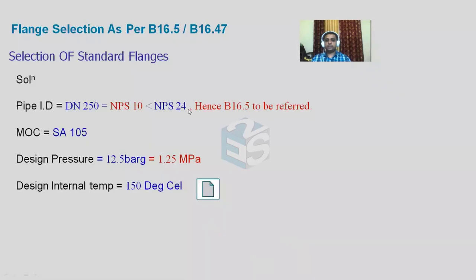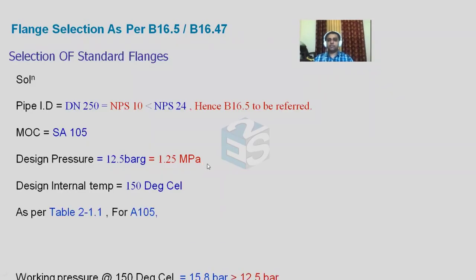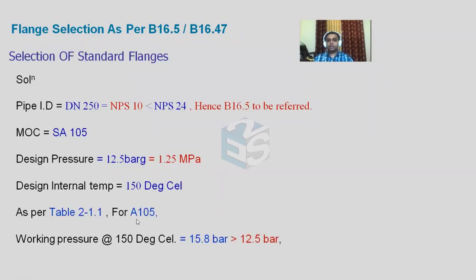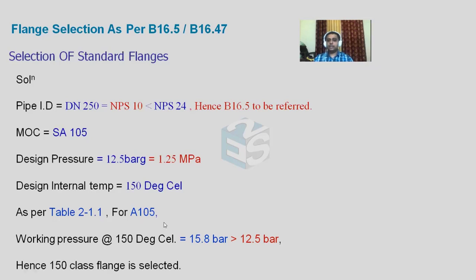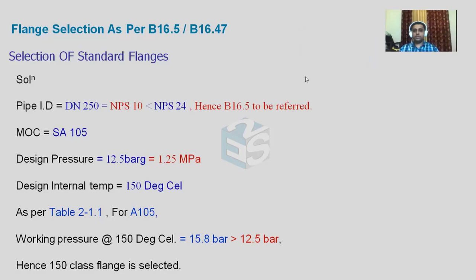So we have selected the correct flange class based on material A105, temperature, and required pressure. 150 class standard flange is sufficient for 150 degrees Celsius and 12.5 bar gauge pressure.